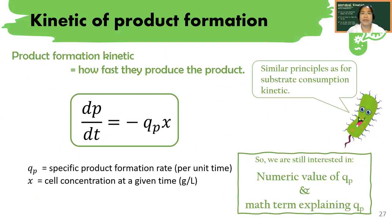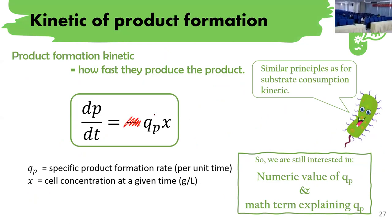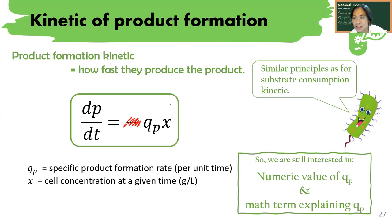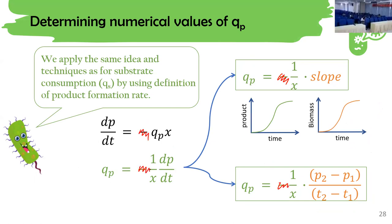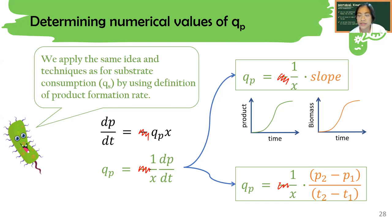Let us go through product formation kinetics. The same principle applies. One mistake to note: the negative sign should be crossed out for product formation because product formation is positive — it increases over time. The same techniques you used for qs apply to qp. So you need to understand that the slope will be positive because product is produced, it increases over time. Those are the numerical values of qp — the same technique as for qs.